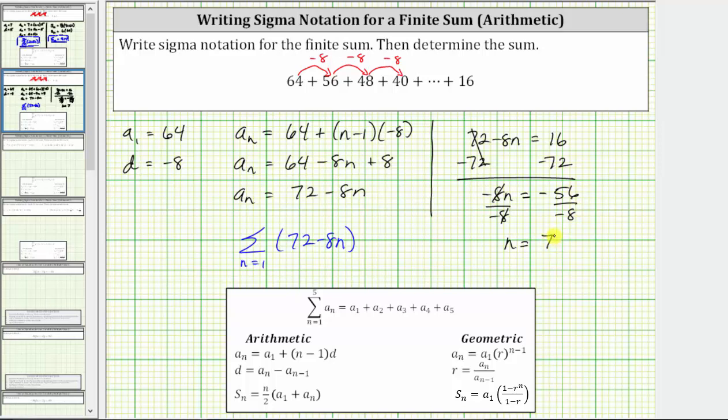The upper limit of the index, or the last value of n, is 7. And now we have the sum written using sigma notation.